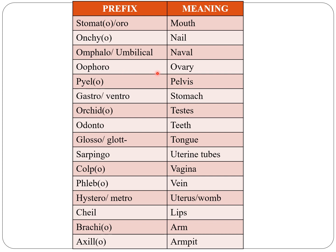Oophoro indicates ovary. Pyelo indicates pelvis. Gastro or ventro — both indicate stomach. Orchid indicates testis. Odonto indicates teeth. Glosso or glot — both indicate tongue. Salpingo indicates uterine tubes. Colpo indicates vagina.